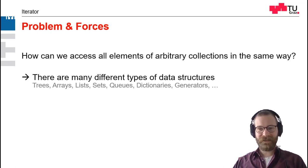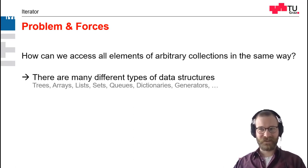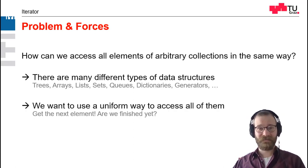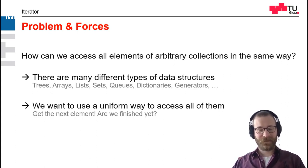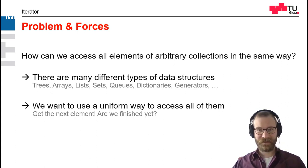Accessing them by index or by pointer arithmetic is not possible. Every collection has its own way of getting elements, but this is quite cumbersome. We want the same uniform way to access all elements. Especially if you want to iterate over the elements, it doesn't make sense to copy all elements of a set into a list or into an array first, and then access all elements in that array.